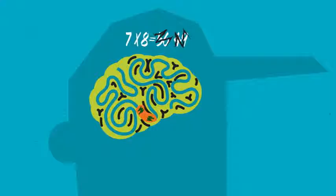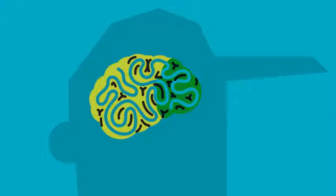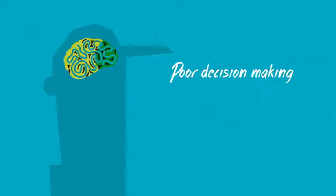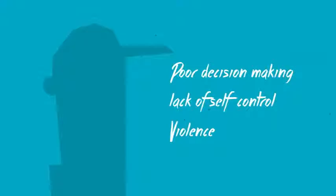Repeated drinking can also affect the frontal areas of the young brain, which control impulses and thinking through consequences. This can lead to poor decision-making, lack of self-control, and even violence, both now and into adulthood. The consequences are tragic and too often deadly.